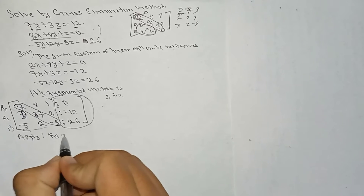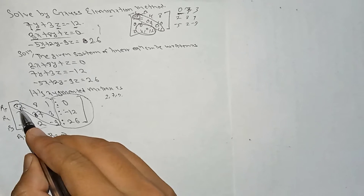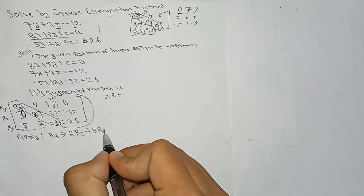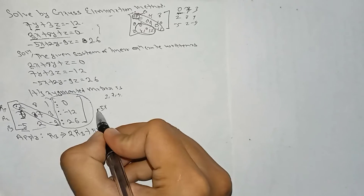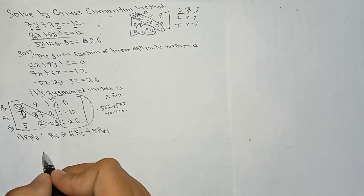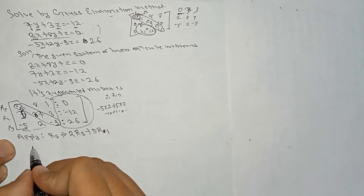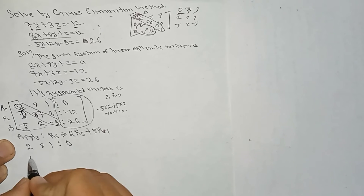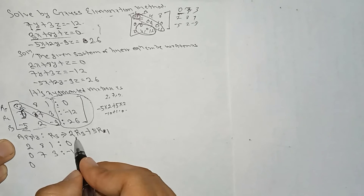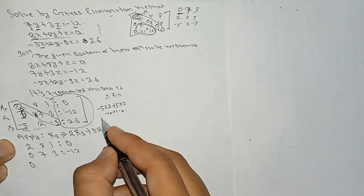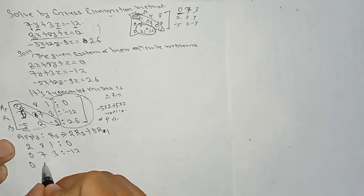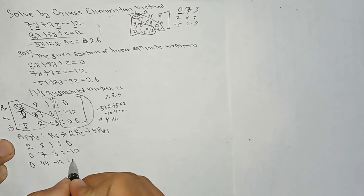Apply the row operation: in row 3 we have minus 5, and in row 1 we have 2. So: minus 5 into 2 plus 5 into 2 equals minus 10 plus 10, which is 0. Row 1 and row 2 stay as they are: 2, 8, 1, 0 and 0, 7, 3, minus 12. Row 3 becomes: 0, and 2×4 plus 5×8 equals 8 plus 40 equals 44, and it becomes minus 13, and 52.